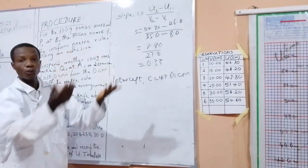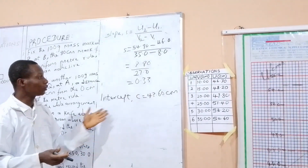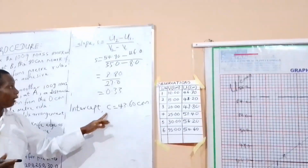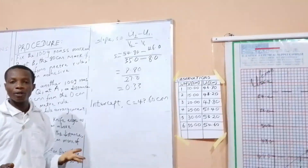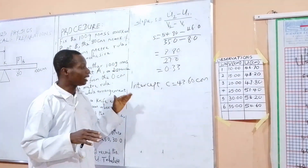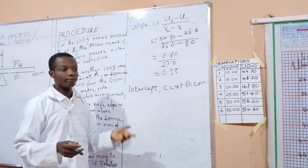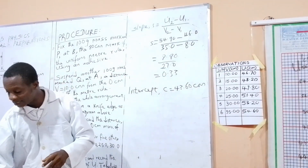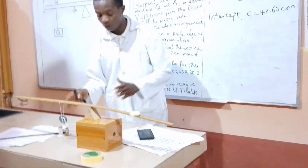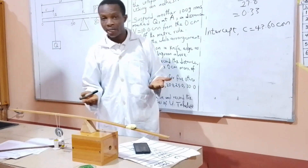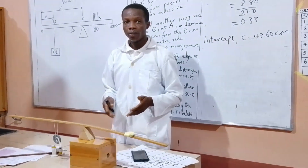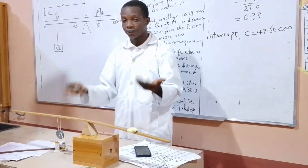The rest are substitutions — we can substitute the slope and intercept into the given expressions to get what we are looking for. Now for precautions: first, we close our windows and doors in the laboratory to avoid wind effect. Second, we ensure that the mass did not touch the table to avoid errors. Third, we ensure that parallax error was avoided when reading the meter rule. Lastly, we ensure that the meter rule was stable before taking readings.